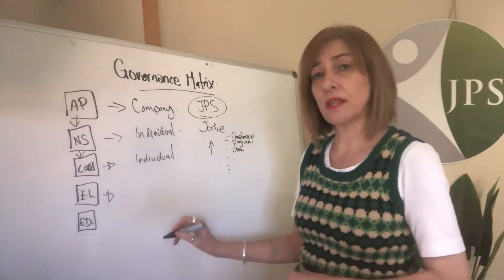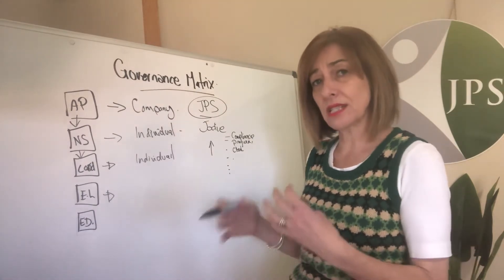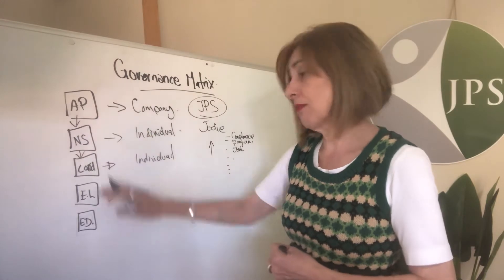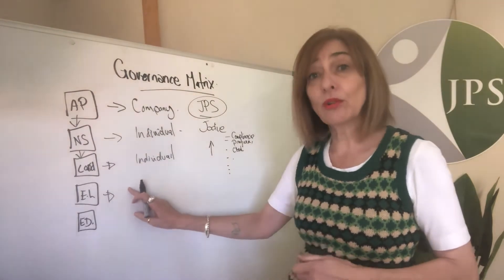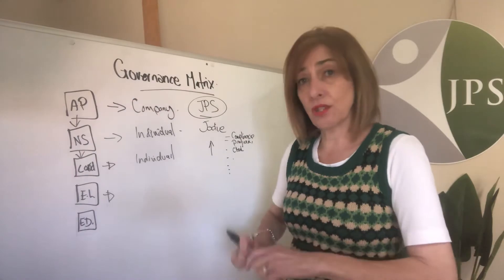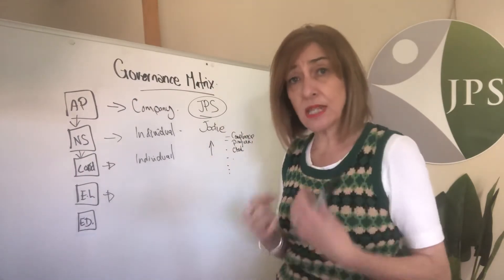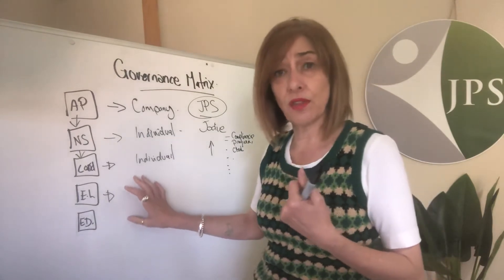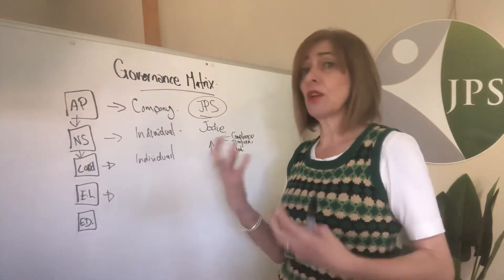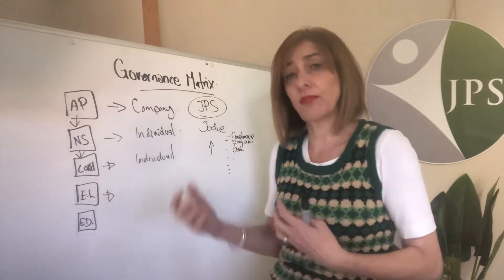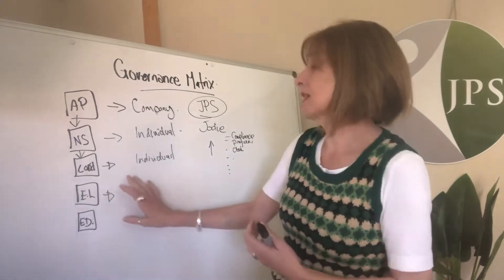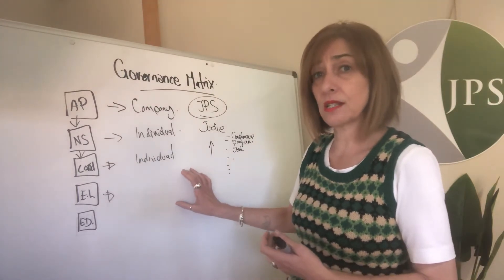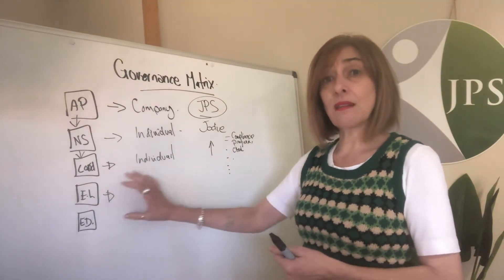The educational leader is a position within the company that doesn't necessarily hold any liabilities — those sit with the three roles above. However, the educational leader does play an important role in making sure that children's needs are met, that the educational program is reflective of the outcomes, that the right documentation is being kept, and that all those sorts of things are happening. This role should be supportive of educators to make sure they are meeting their obligations under the legislation.